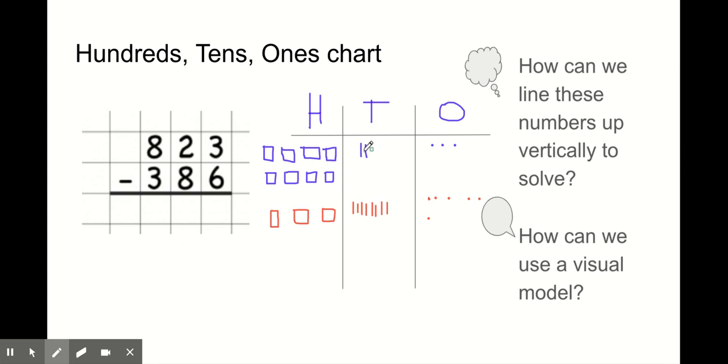I'm going to take a 10 away and move it over to the ones. Now I have 10 more ones, so I'll count them. 1, 2, 3, 4, 5, 6, 7, 8, 9, 10. How many ones do I have? 13 ones.